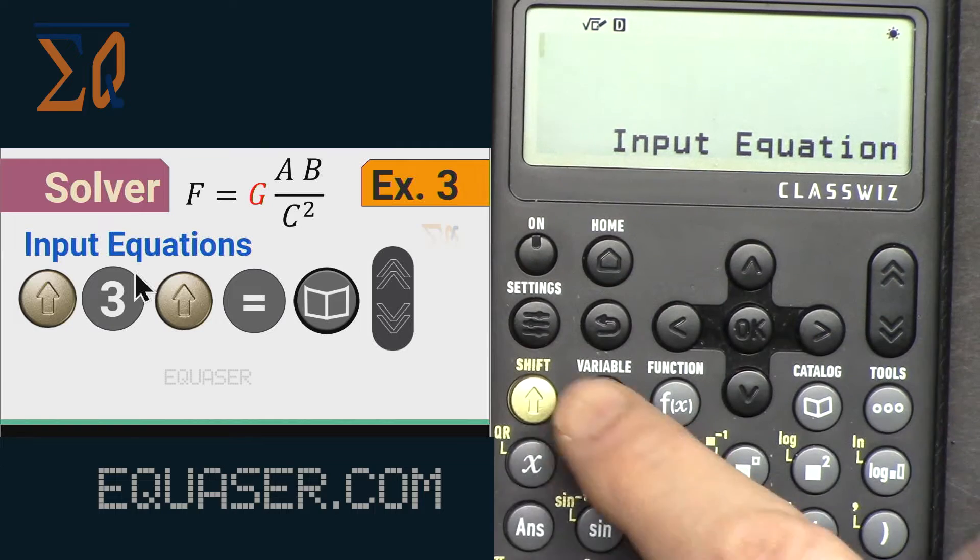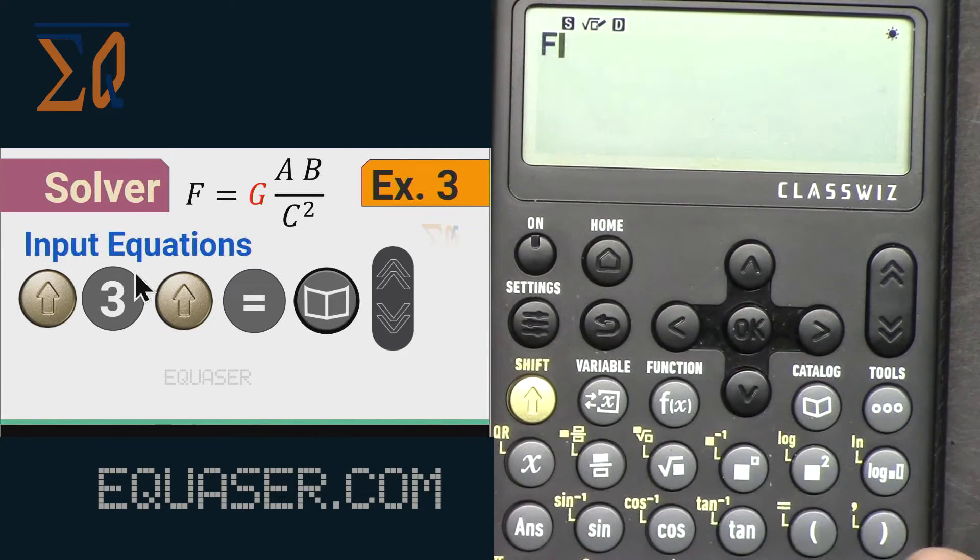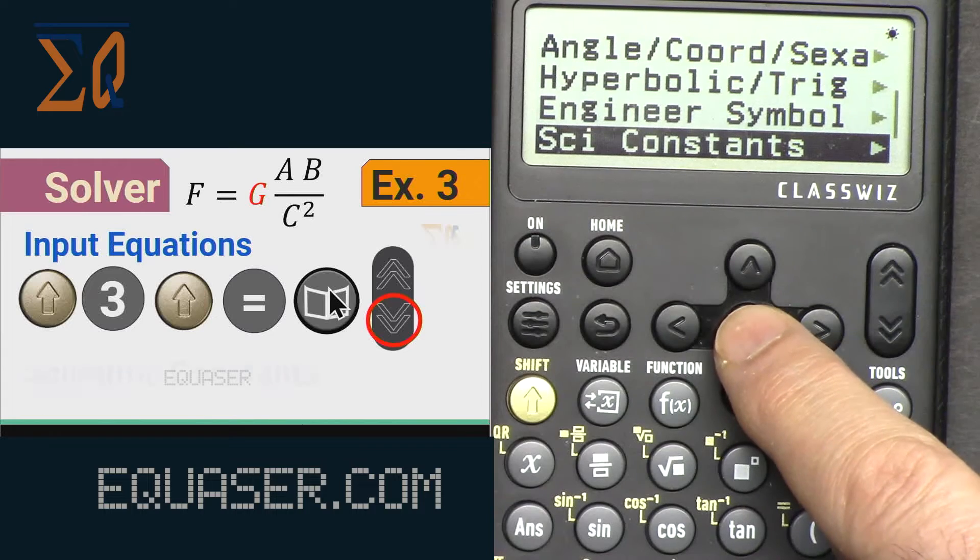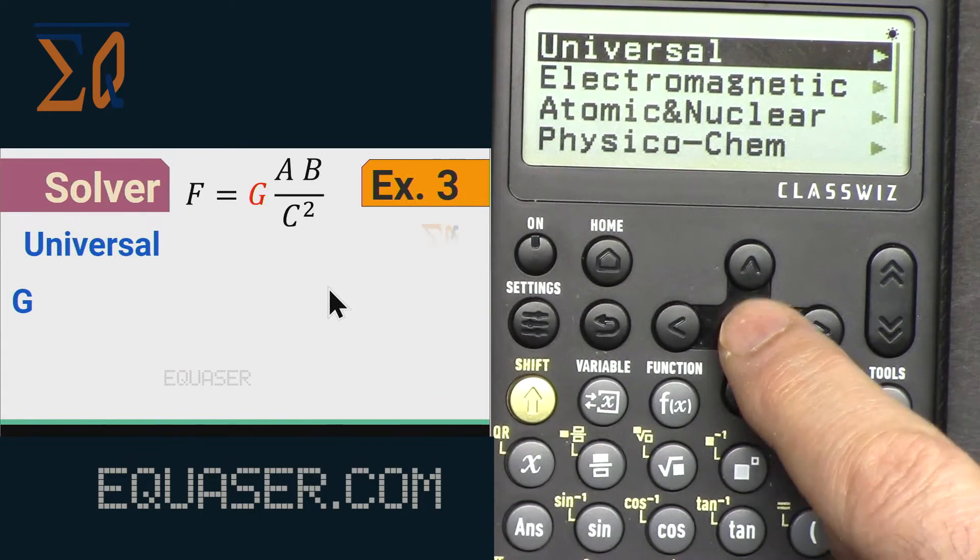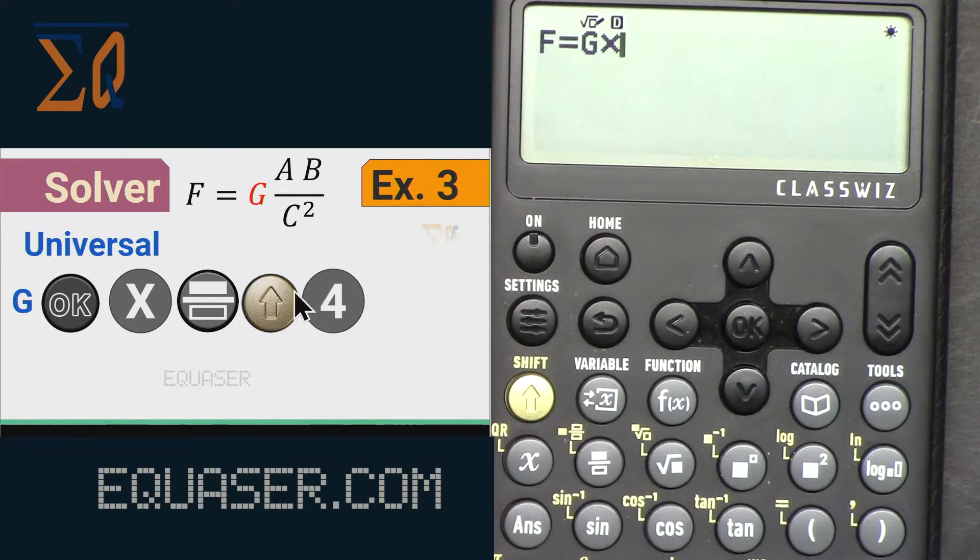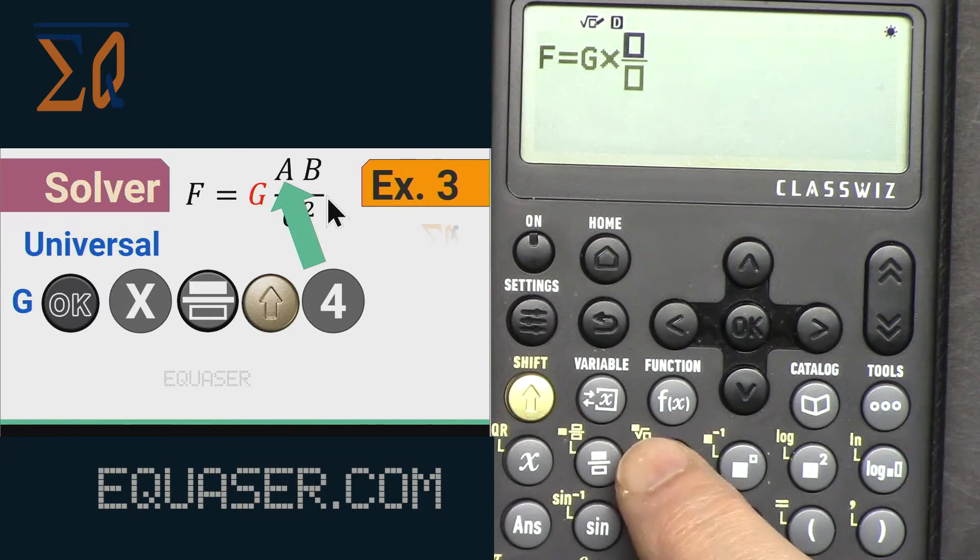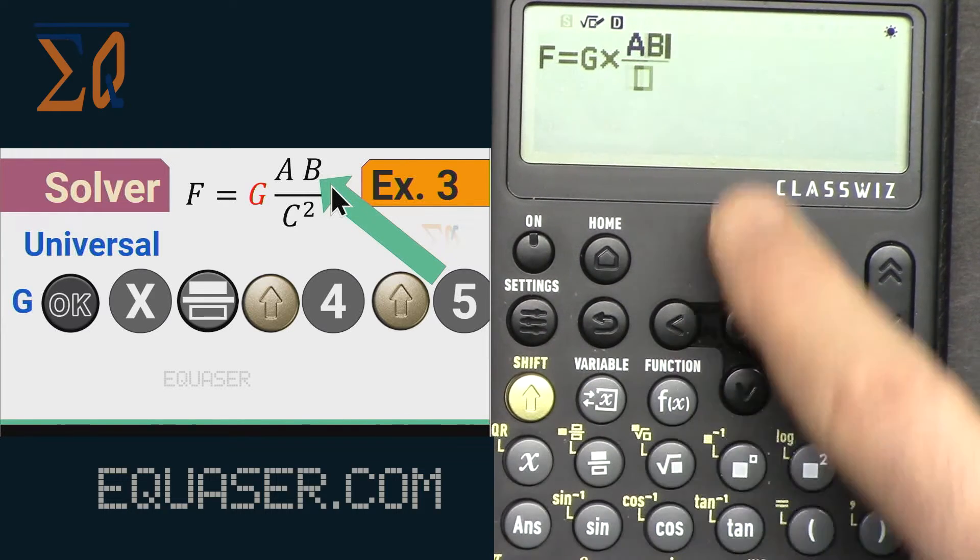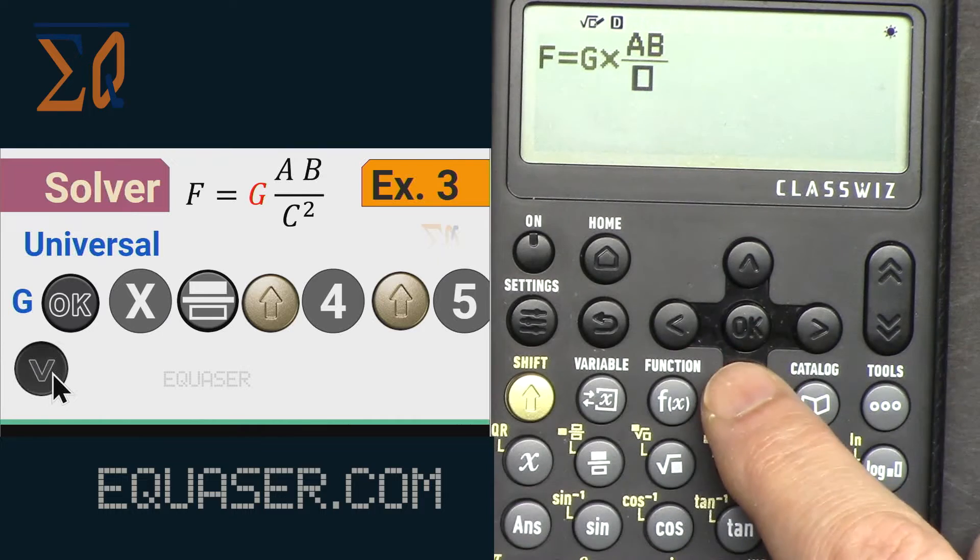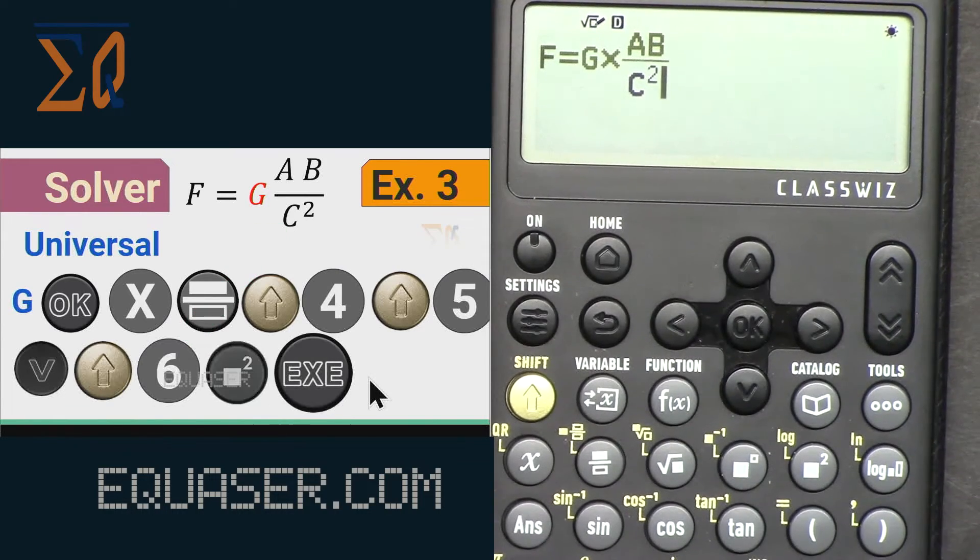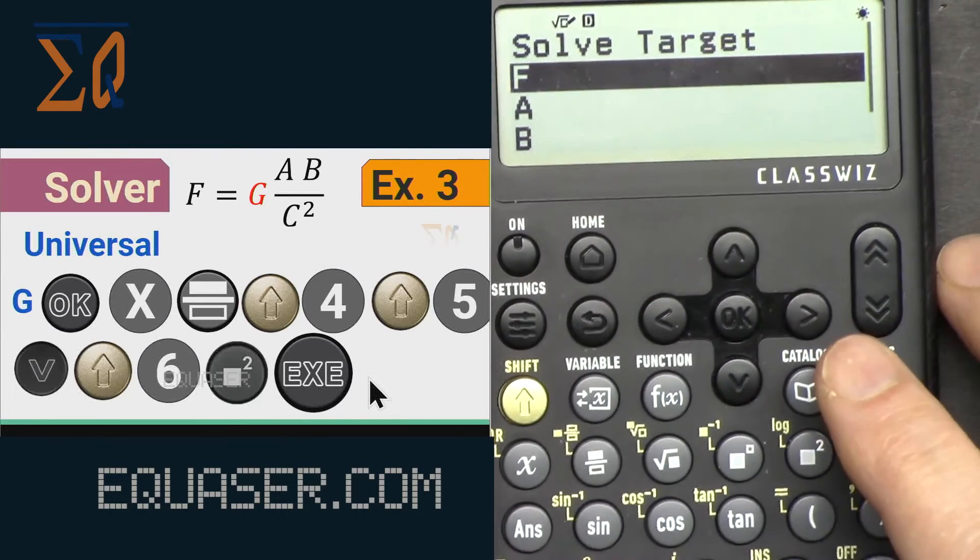To input our equation, let's press f, alpha 3 that is f, alpha equal, and then let's go for the catalog and then go down scientific constants, and then go to universal and then find g and select it. And then we type a, so we put this, and then we type a, alpha 4 that is a, and then b, alpha 5 that is b, and then we go down, and then alpha 6 c, and then squared.